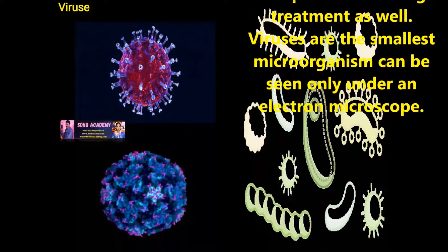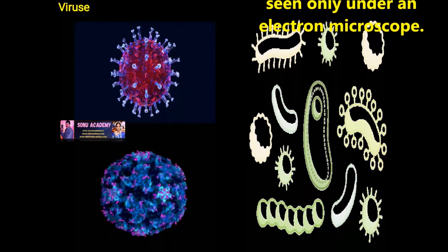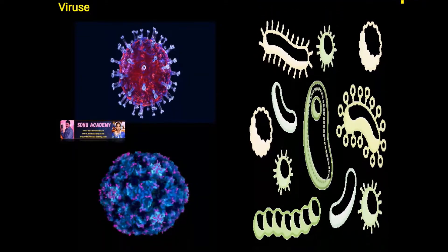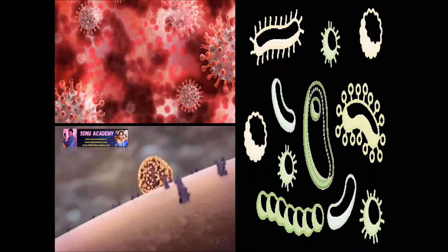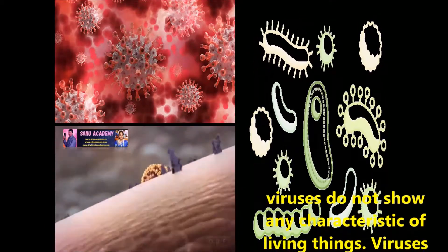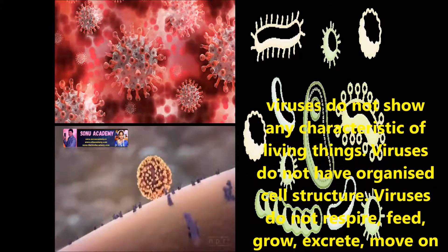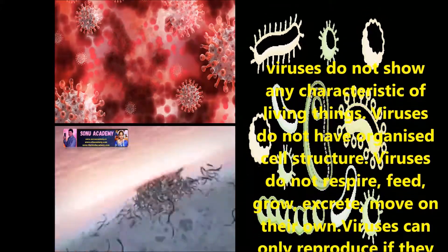Viruses are smallest organisms and can be seen only under an electron microscope. Let us discuss the characteristics of viruses. Children, viruses do not show any characteristics of living things.